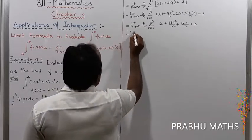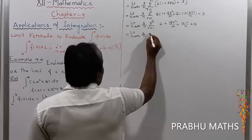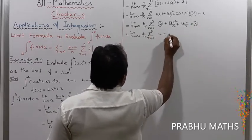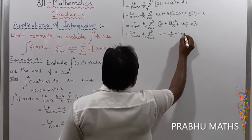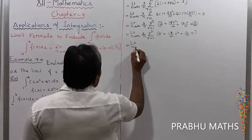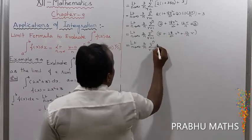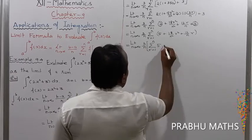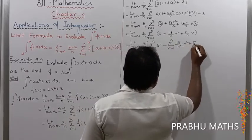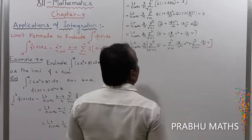Next: limit n tends to infinity of 3 by n, into summation r from 1 to n of (5 + 18r²/n² + 12r/n). Separating the summations: 5·Σ1 + (18/n²)·Σr² + (12/n)·Σr, for r from 1 to n.